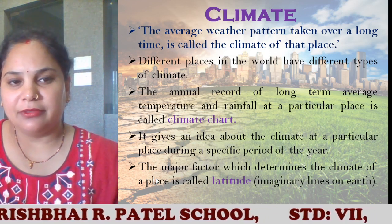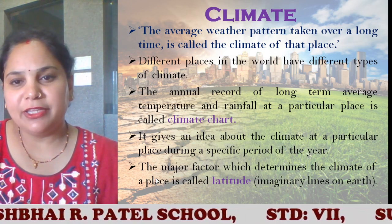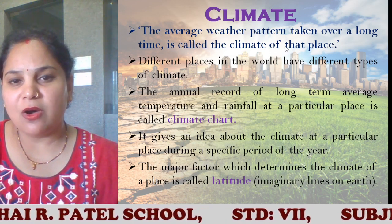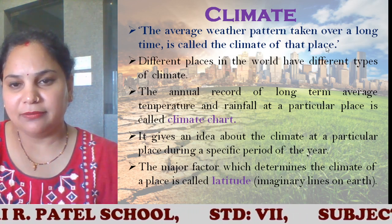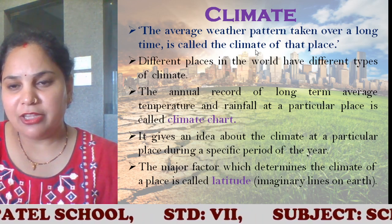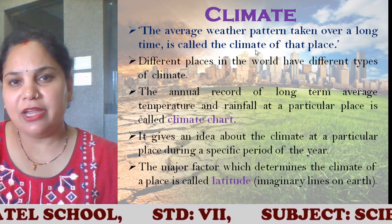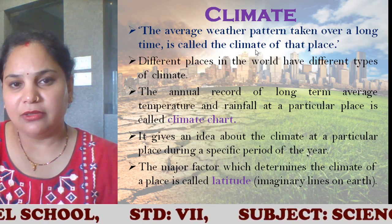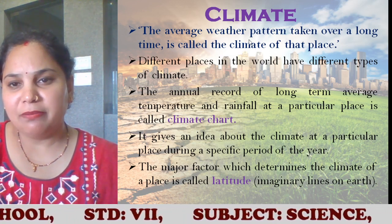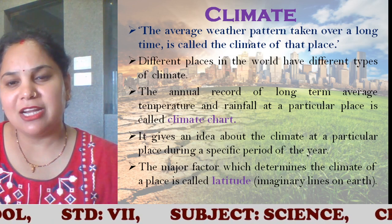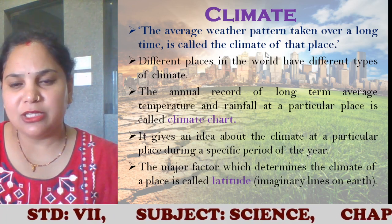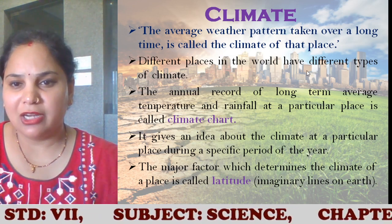So what is climate? The average weather pattern taken over a long time is called the climate of that place. Weather is a day-to-day activity — the day-to-day weather pattern. When you take this average of the weather pattern over a long time, that makes the climate of that place. Different places in the world have different types of climate.